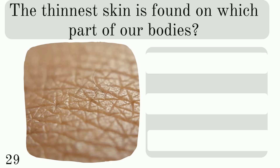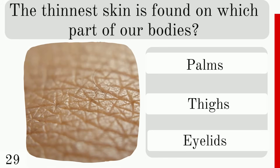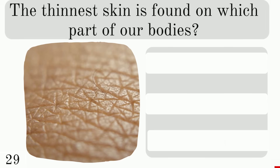The thinnest skin is found on which part of our bodies: palms, thighs, or eyelids? The answer is eyelids.